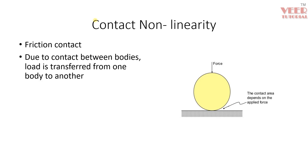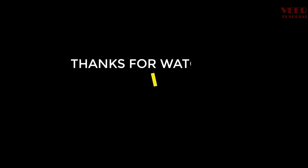Finally, contact nonlinearity: whenever two bodies are in contact — for example, a circular body and a flat surface — there will be some friction between these two bodies, causing load transfer from one body to another. This is called contact nonlinearity or boundary nonlinearity.